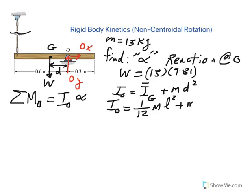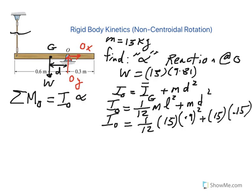So for a slender rod, the mass moment of inertia through the axis through its centroid is equal to 1/12 ml squared plus md squared. So if you go ahead and plug in the numbers, 1/12, mass is 15 kg, the length is 0.9 squared plus 15 kg times 0.15 squared. So I sub O comes out to be equal to 1.35 kg⋅m².